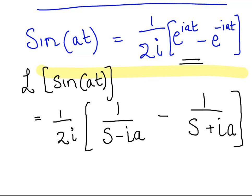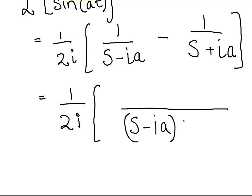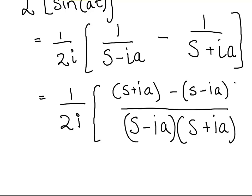Okay, now let's just sort of continue on from that. So what we're going to do is cross multiply those two terms there. Let's leave 1 over 2i on the outside. Okay, so s minus ia times s plus ia. Okay, and over here we have s plus ia minus s minus ia. So let's cross multiply the two terms, we'll get that there.